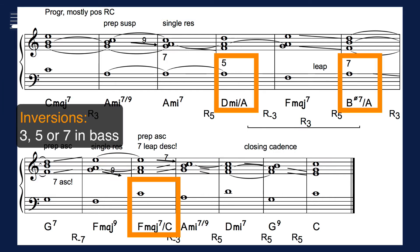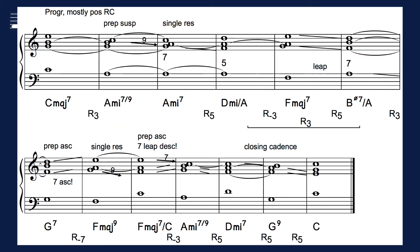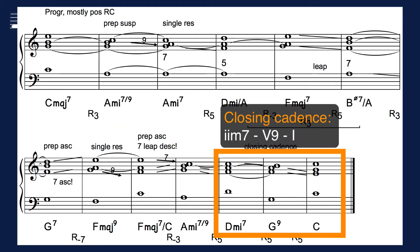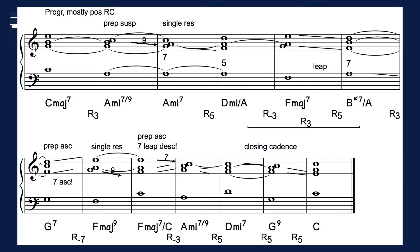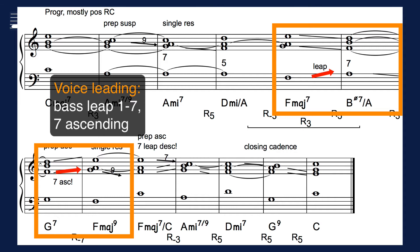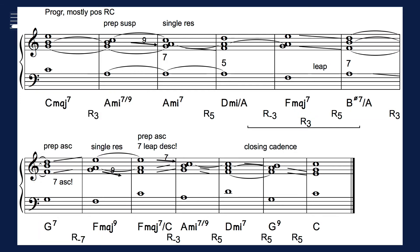Triads and 7 chords may be set as inversions with acceptable leaps in the bass part, although the descending leaps in the second inversions in measures 4-5 and 9-10 yield a suboptimal voice leading compromise. The example closes with a strong 2-5-1 cadence. In the voice leading, note the acceptable upward resolution of the 7 in the G dominant 7 chord, a case discussed in part 1 of this series.